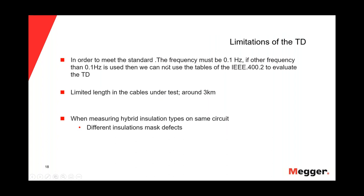Regarding the limitations of Tan Delta: in order to meet the standard, the frequency must be 0.1 Hz. If other frequencies are used other than 0.1 Hz, we cannot use the tables of the IEEE 400.2 to evaluate the Tan Delta. Another limitation is the limited cable length under test — around three kilometers. Another major factor is when measuring hybrid insulation types on the same circuit — for example, some EPR, some PILC, some XLPE. The different insulation types will mask the defects depending on what insulation types are in the circuit. And if you're not using 0.1 Hz and three steps, there is no table to compare to.